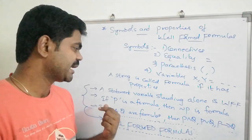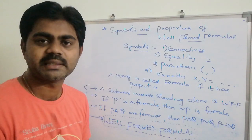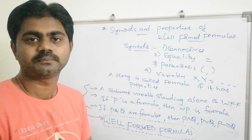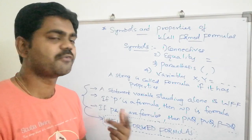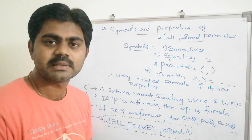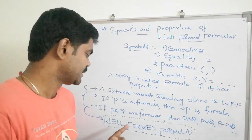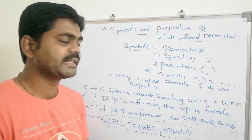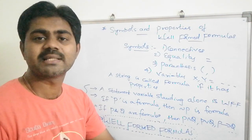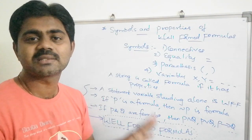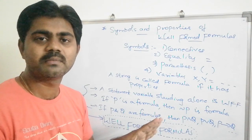The second property: if P is a formula, then negation P is also a formula. And if P and Q are formulas, then combinations like P and Q, P or Q, P implies Q, and P biconditional Q are all well formed formulas.